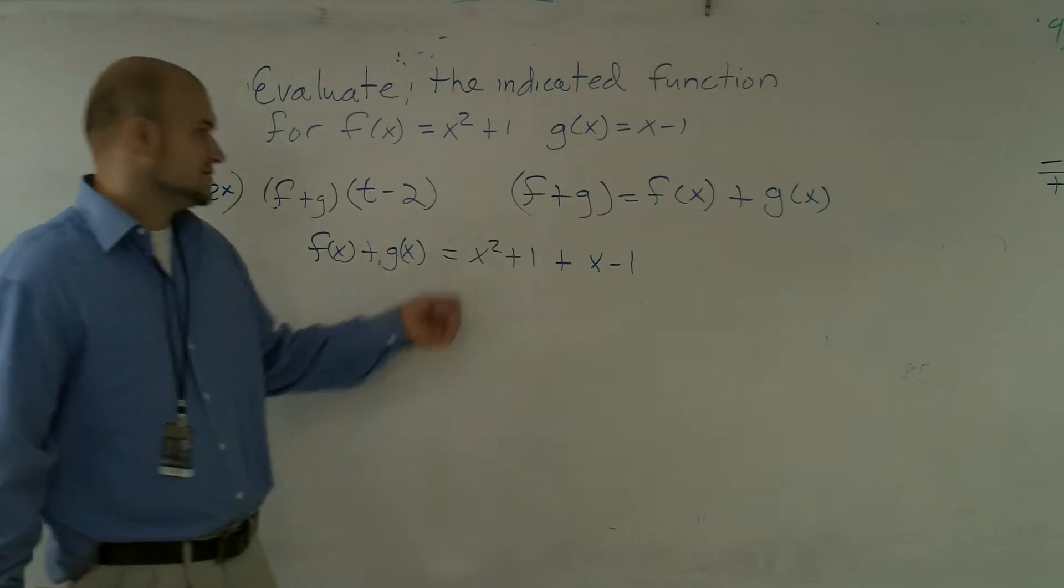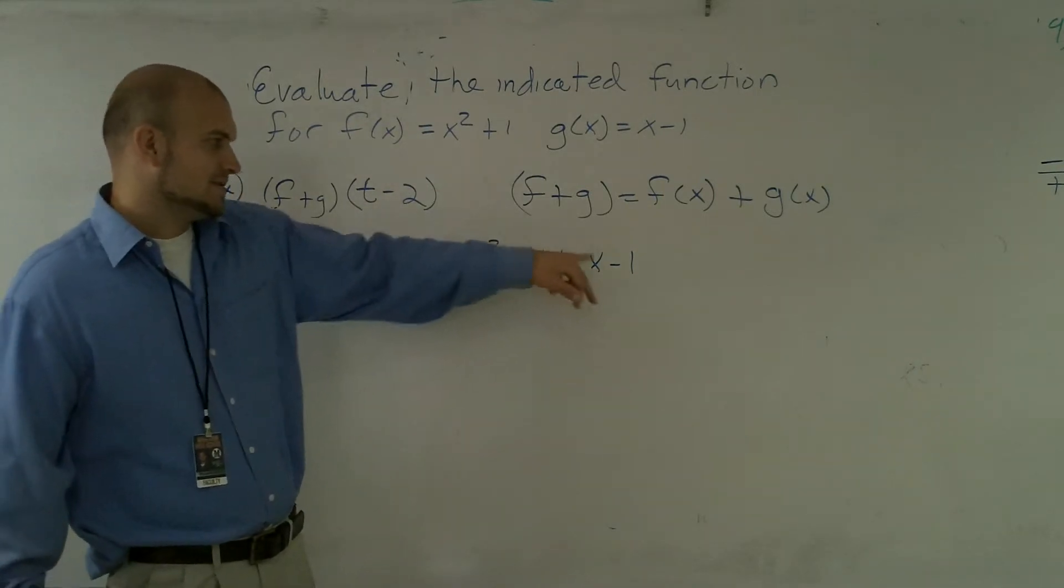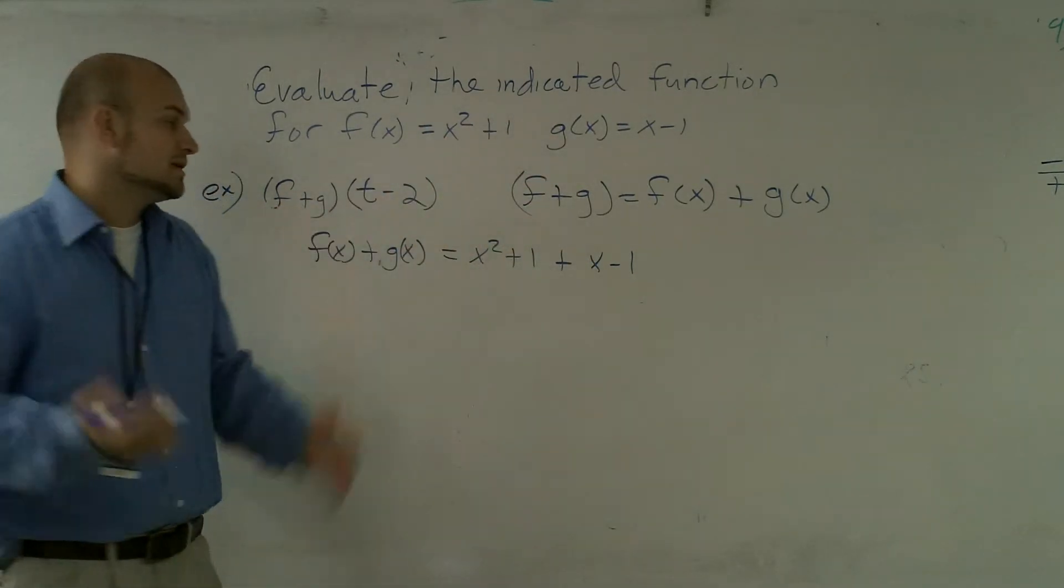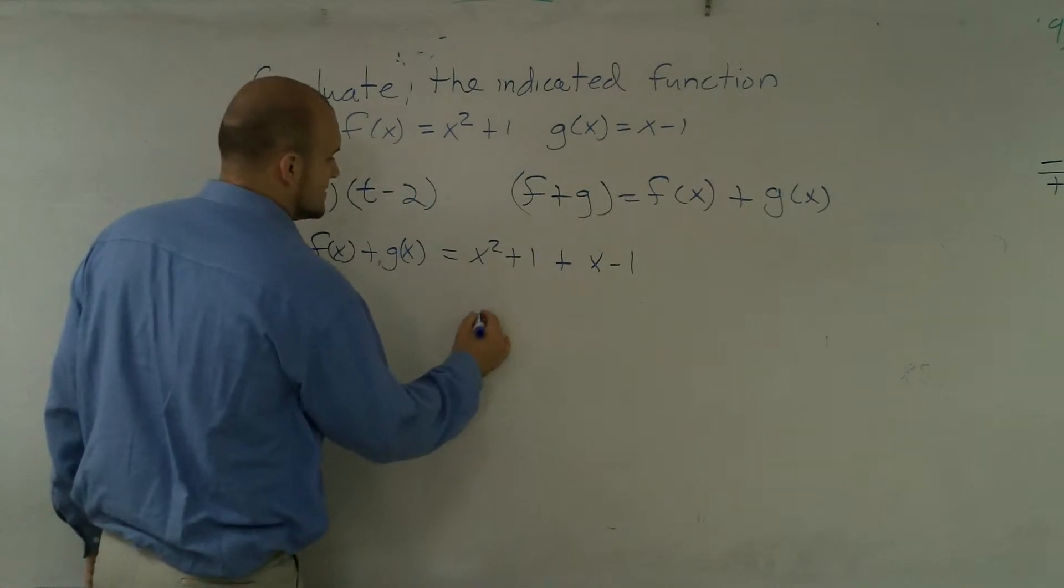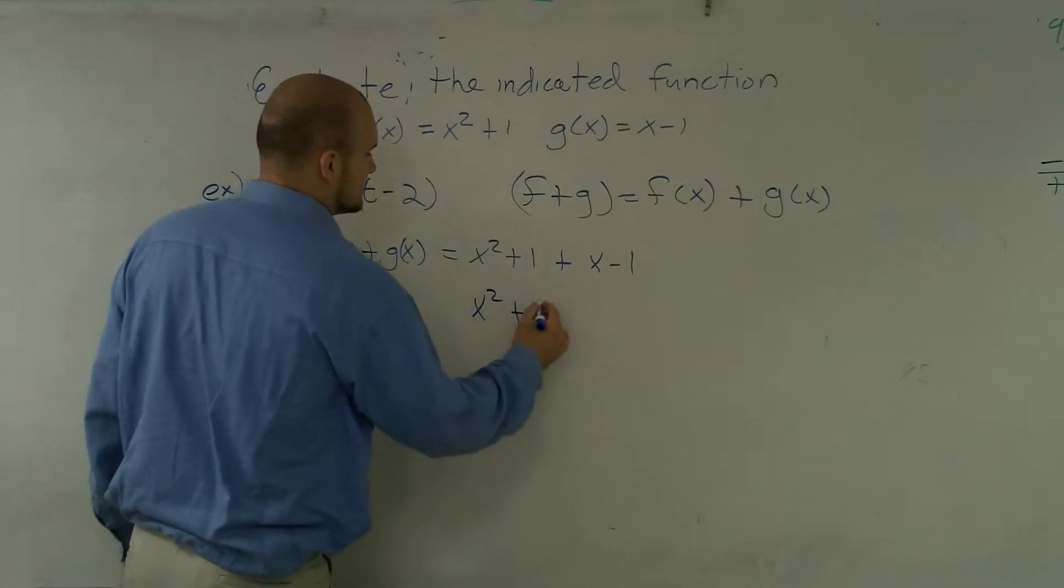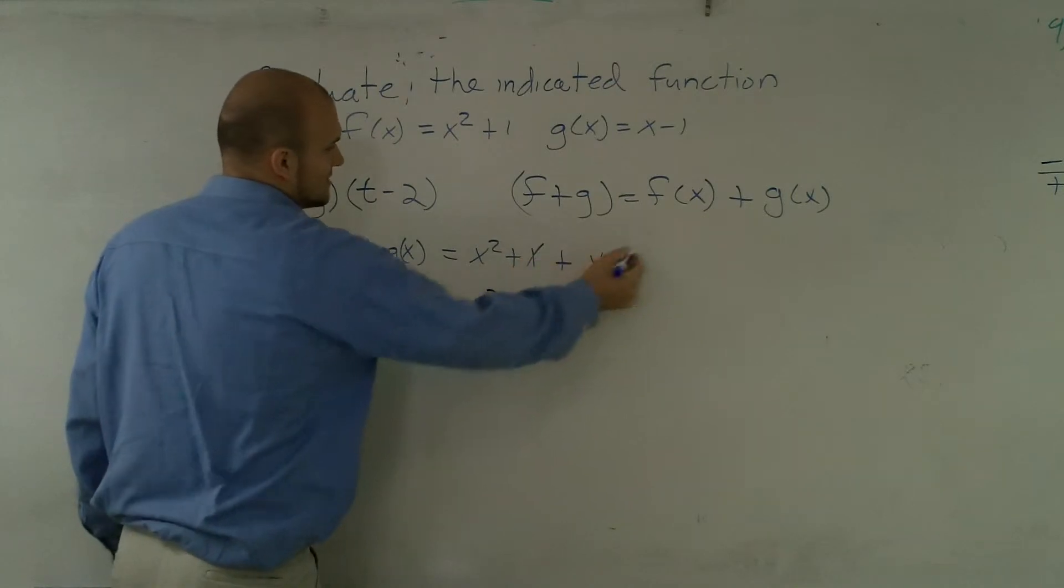Now I can combine my like terms. I can add my 1 - 1 which becomes 0. So therefore now it has x² plus x, and then those two cancel out.